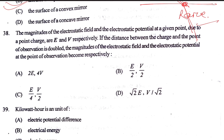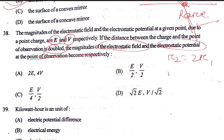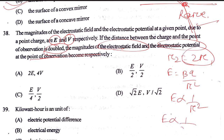The magnitude of electrostatic field E and electrostatic potential V at a given point due to a point charge. If the distance between the charge and the point of observation is doubled — R2 = 2R1 — then E is inversely proportional to R squared. So E becomes E/(4), since 1/(2R)² = 1/4.